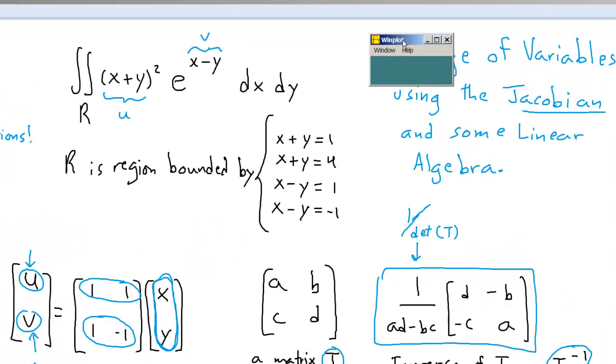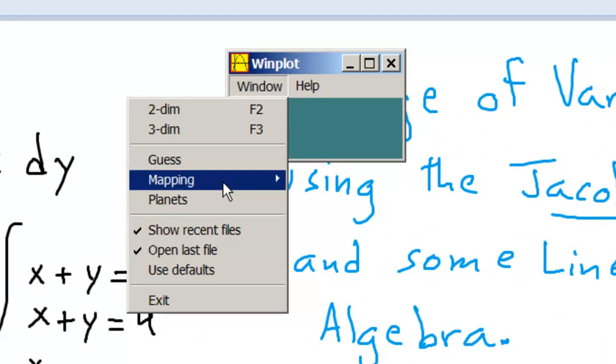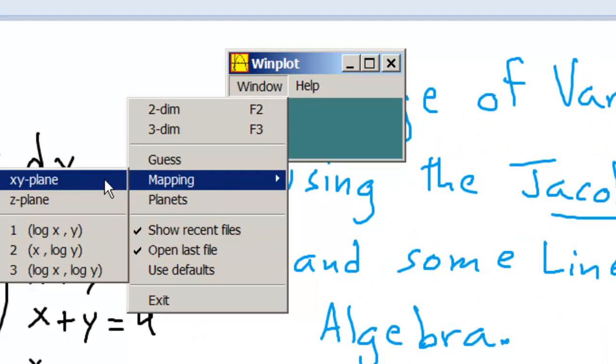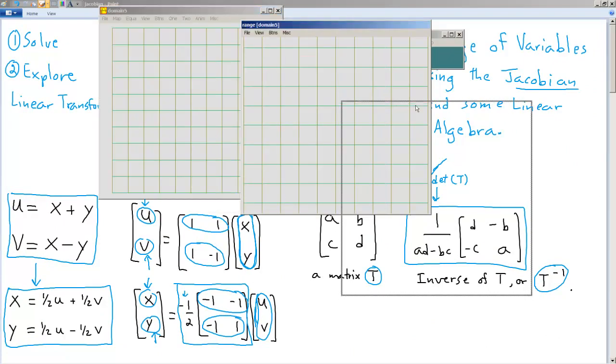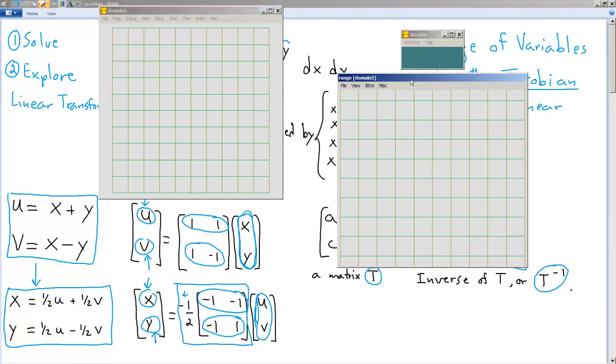So what we'll do is we'll open up WinPlot, we'll go to Window, Mapping, XY Plane, and that will bring up two windows. One will be the domain, the other will be the range. The range is clearly labeled, so this is the domain.